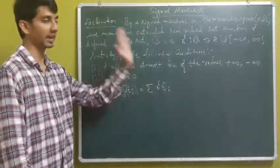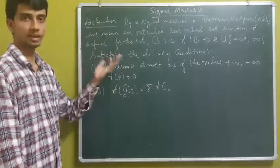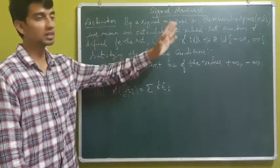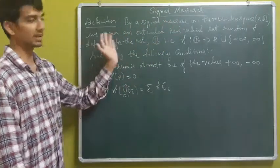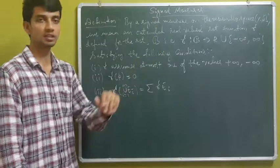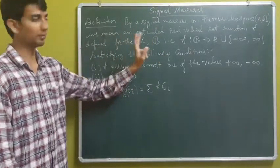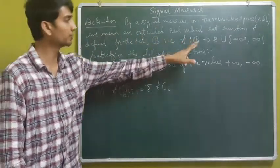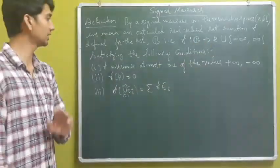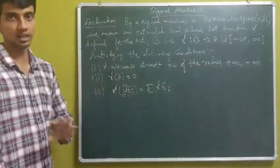We are into the concept of signed measures. Look at the definition. The signed measure on the measurable space (X, B) is an extended real-valued function, say gamma, defined for the sets B — that is, it is a mapping from B to R union {minus infinity, plus infinity} satisfying three conditions.